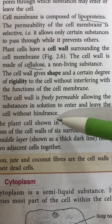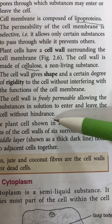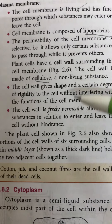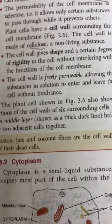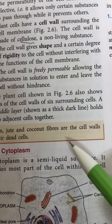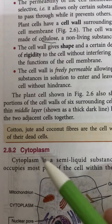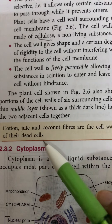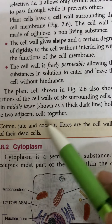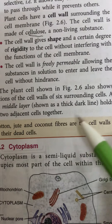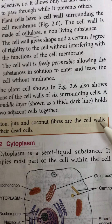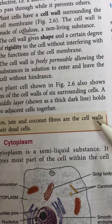So I hope you have understood the four points of difference between cell wall and cell membrane. Cotton, jute, and coconut fibers are the cell walls of their dead cells. So we derive these fibers basically from the cellulosic cell walls.